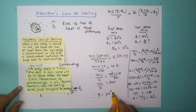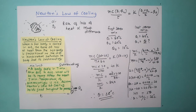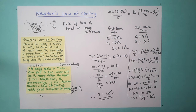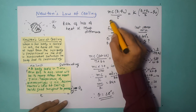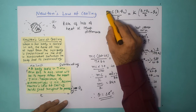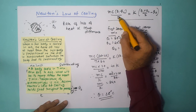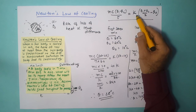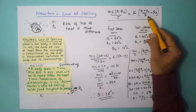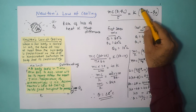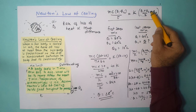So the temperature after the next 7 minutes is 28°C. To summarize: Newton's law of cooling is given by M×C×(theta 1 − theta 2)/T proportional to the temperature difference between the object and the atmosphere, where we use the average temperature of the object. Thank you.